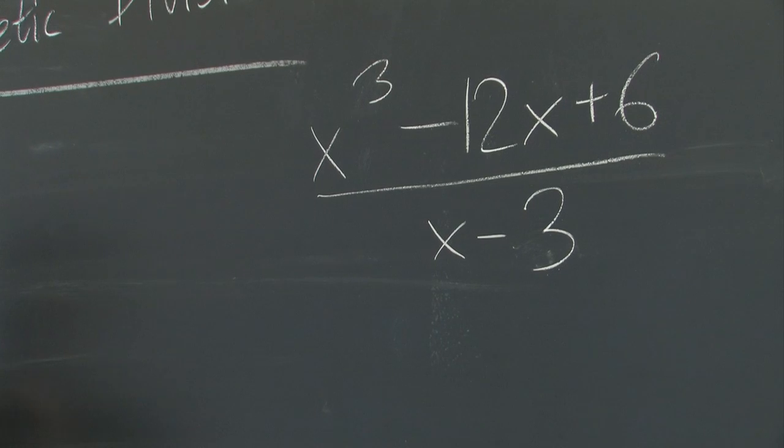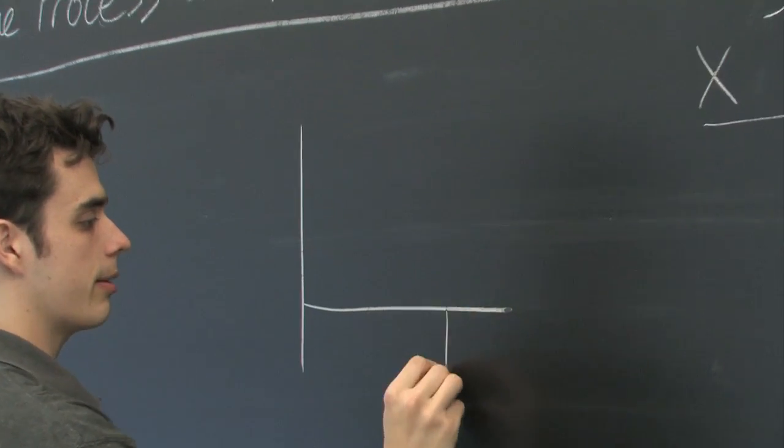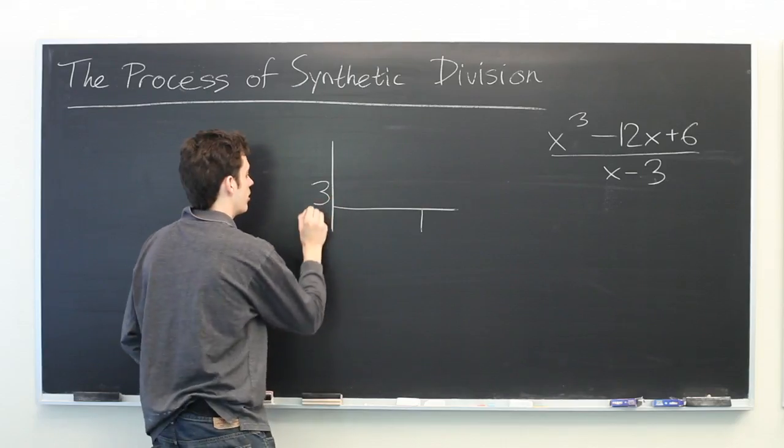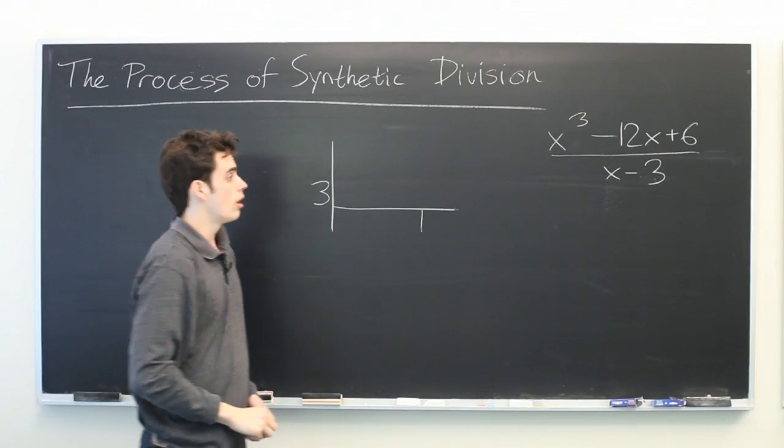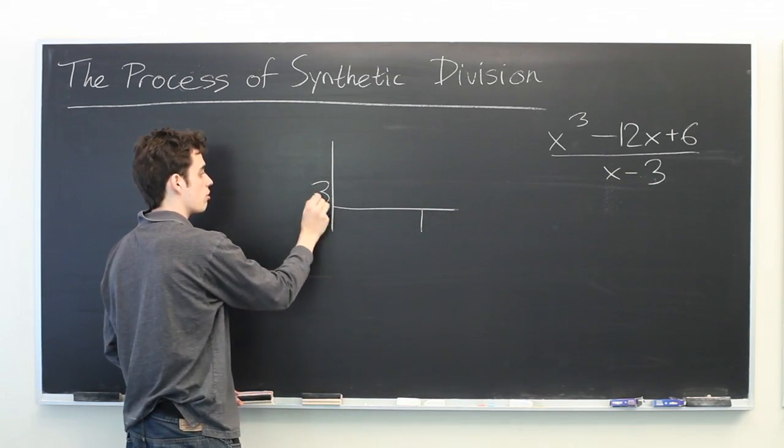So the setup for synthetic division may look a little weird but it does work quite nicely. Here we're going to write our value of a, in this case 3. Note that if this were x plus 3 the sign would change to a minus here.